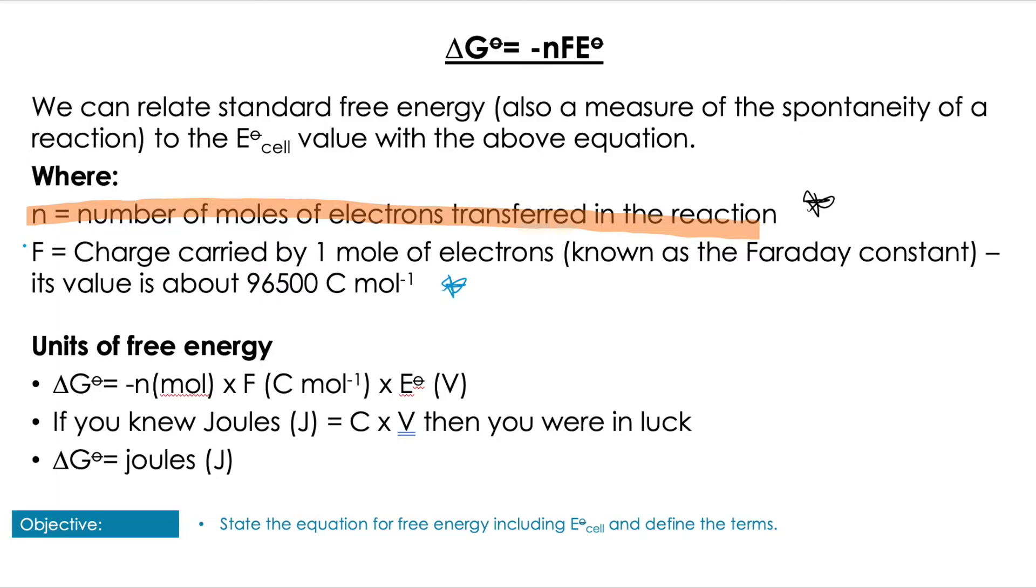You can see at the bottom here I've shown you that if we have moles and coulombs per mole and volts, these cancel out to give us coulombs times volts, which for those who don't know equals joules, and joules is the units of energy that we previously used for ΔG°.